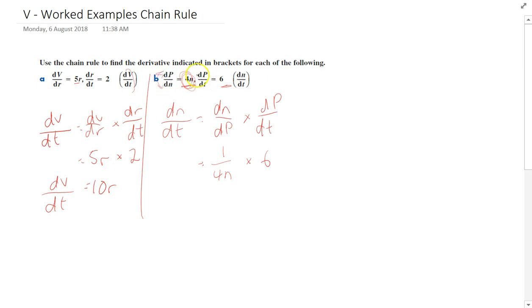You can see dP is on the top of both of those, need dP on the bottom of one of them so they can cancel. All right, so that's 6 on 4n, which is 3 on 2n, and that's the change in n with respect to time.